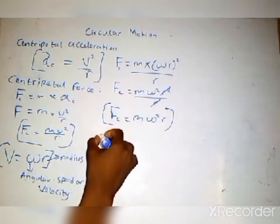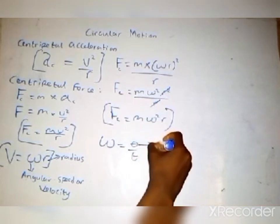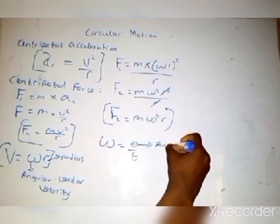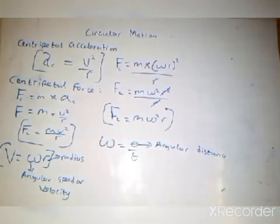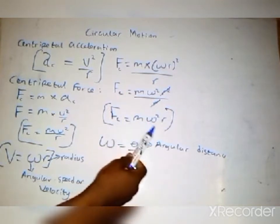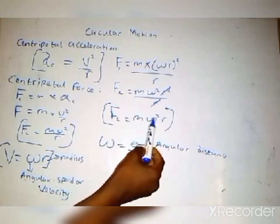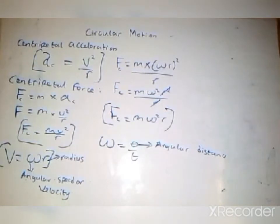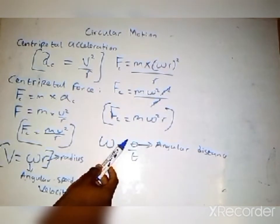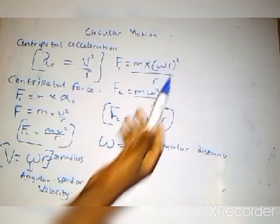Note that angular velocity ω equals θ over t, where θ is the angular distance. Sometimes a problem gives you θ and time t but not ω and not velocity. So we can calculate ω from the given θ and t, and then use it to solve for the centripetal force.